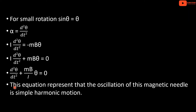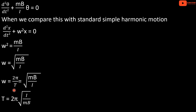This equation represents that the oscillation of this magnetic needle is simple harmonic motion. The equation d²θ/dt² plus (MB/I)·θ equals 0 confirms that the oscillation of this magnetic needle is simple harmonic motion.